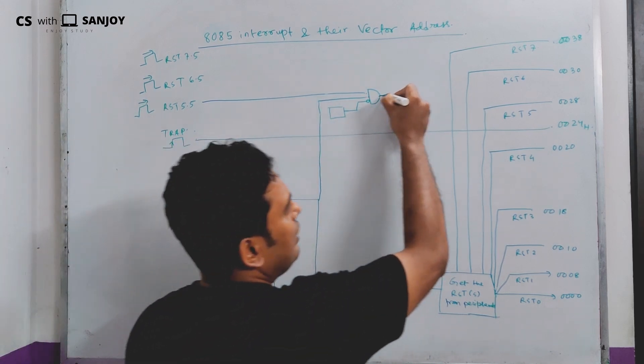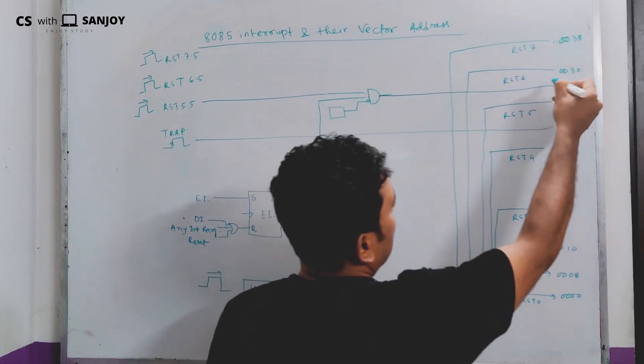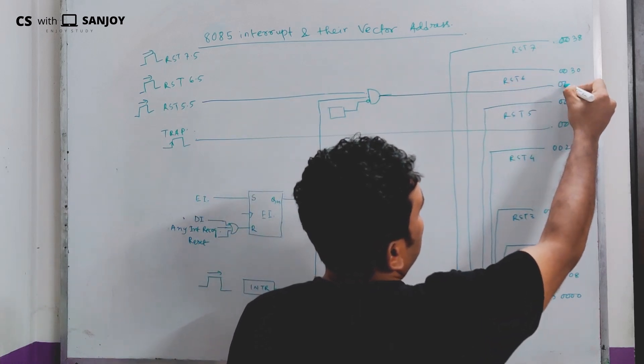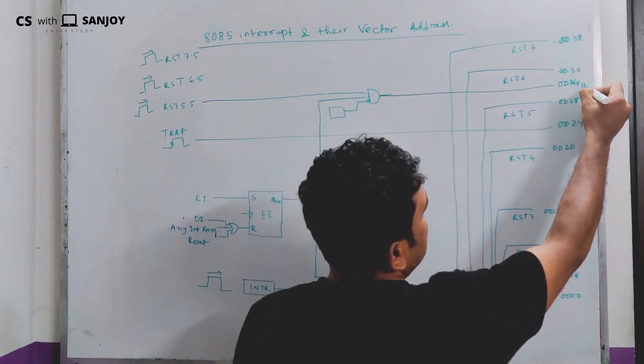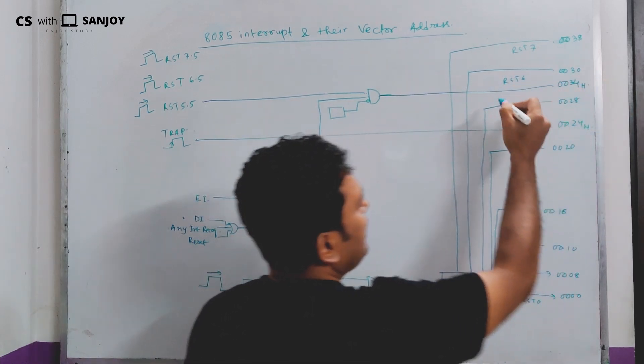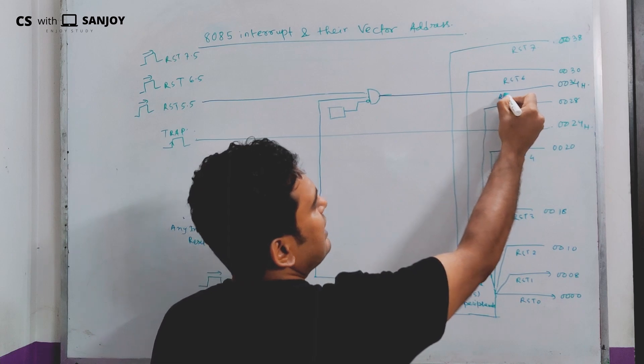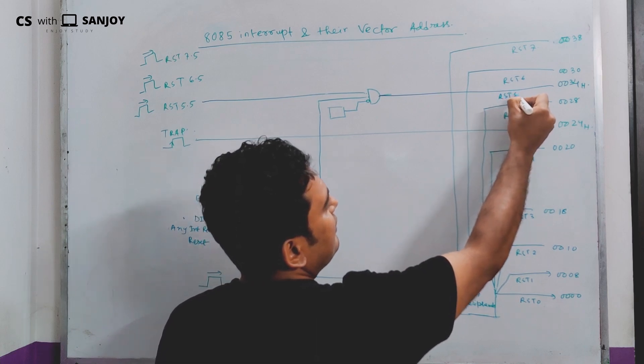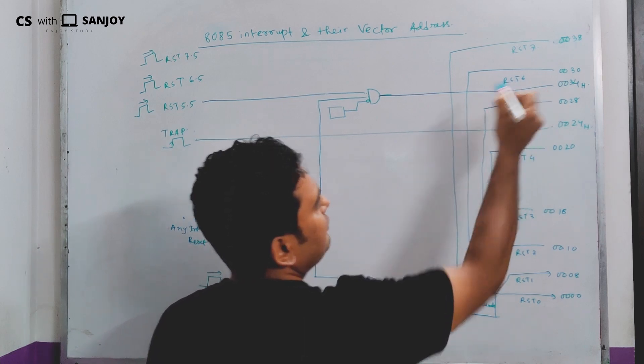The call location of RST 5.5 is 002CH. Whether RST 5.5 is allowed depends on the mask bit.